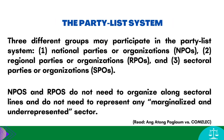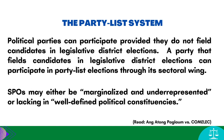The party list system is intended to democratize political power by giving political parties that cannot win in legislative district elections a chance to win seats in the House of Representatives. The voter elects two representatives: one for his legislative district and another for his party list group or organization of choice. In Ang Atong Paglawan v. Comelec, the Supreme Court ruled that three different groups may participate in the party list system: national parties or organizations, regional parties or organizations, and sectoral parties or organizations. National and regional parties or organizations do not need to organize along sectoral lines and do not need to represent any marginalized and underrepresented sector. Political parties can participate in party list elections provided they register under the party list system and do not field candidates in legislative district elections.